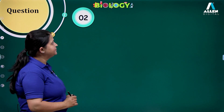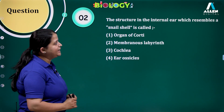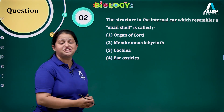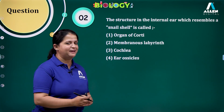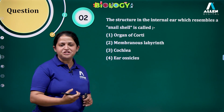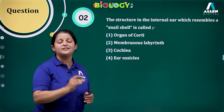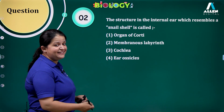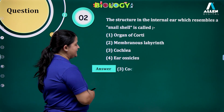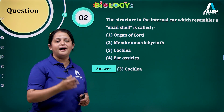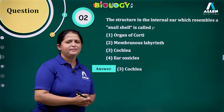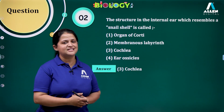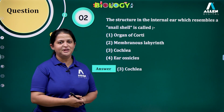Next question: which structure in the internal ear resembles a snail shell? The coiled structure that resembles a snail shell is the cochlea, which is involved in hearing. This concludes the topic of the structure of the ear. Thank you all.